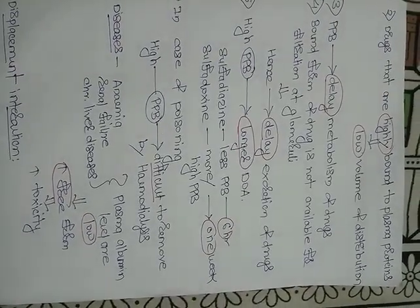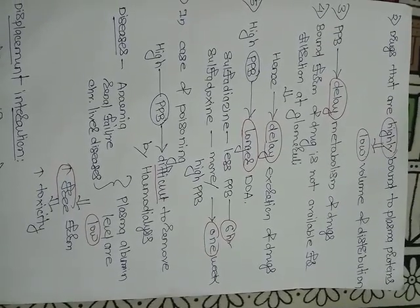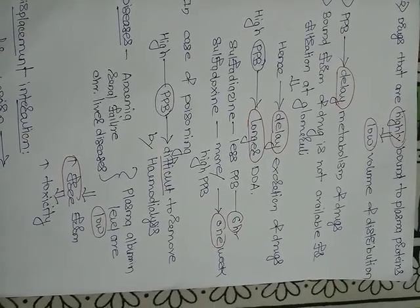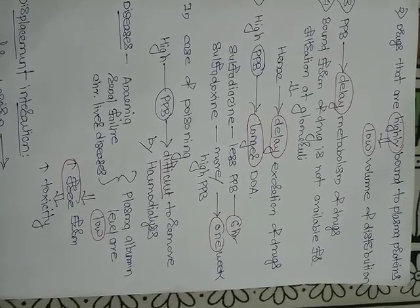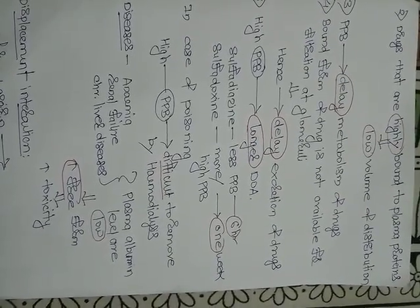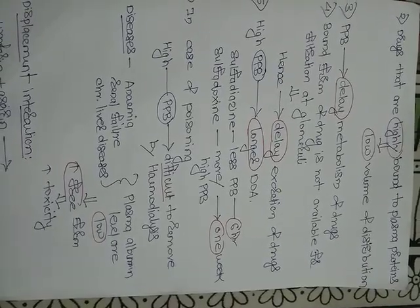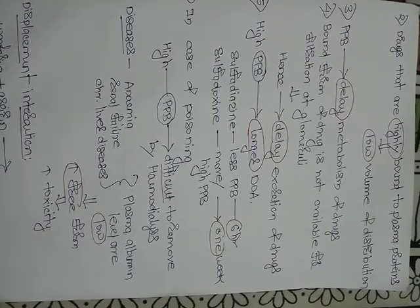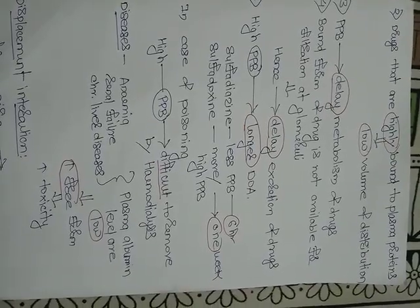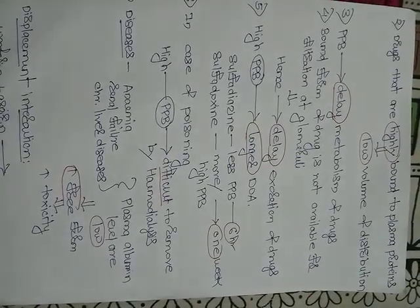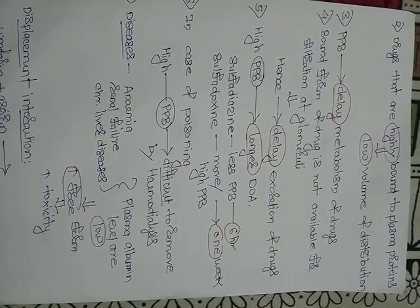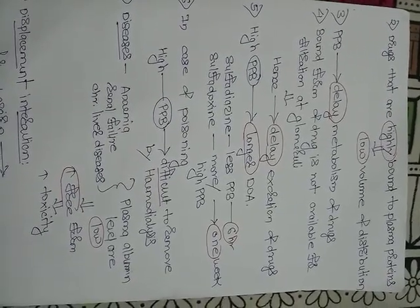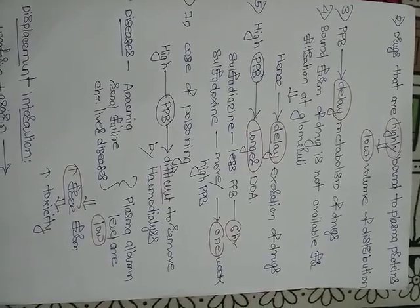The bound form is not available for filtration at the glomeruli, so it also delays excretion. Highly plasma protein-bound drugs have a longer duration of action. For example, sulfadiazine — when less plasma protein bound — has a shorter duration of action of only 6 hours, but when highly bound, its duration of action extends to 1 week.